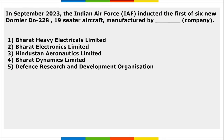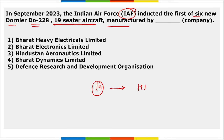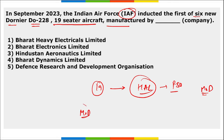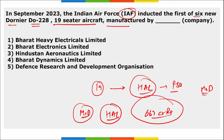Indian Air Force inducted the first of six new Dornier Do 228 19-seater aircraft manufactured by Hindustan Aeronautics Limited, that is HAL — a PSU under the Ministry of Defense. The Ministry of Defense signed an agreement with HAL to manufacture these aircraft with a budget of 667 crore rupees. The correct option is HAL.